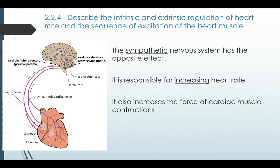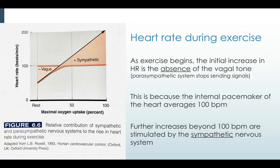The sympathetic system has the opposite effect — it's responsible for increasing heart rate, and also for increasing the force at which the heart muscle contracts, so it can push more blood with each contraction. This diagram represents heart rate during exercise. As exercise begins, the initial increase in heart rate is due to the absence of vagal tone, so heart rate rises back toward its normal internal rhythm of 100 beats per minute. Any further increases beyond 100 beats per minute are stimulated by the sympathetic nervous system.